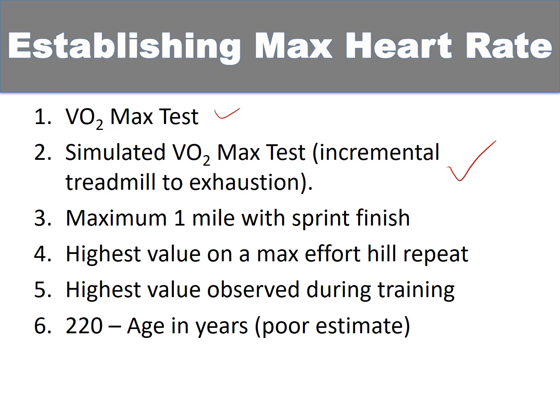Another simple way is a maximum mile to mile-and-a-half run with a sprint finish — check your heart rate immediately as you cross the line and you'll be very close to max heart rate. If you normally train with a heart rate monitor and download data to a software program, you can look through your archives for the highest value on a max-effort hill repeat. That'll probably get you within five or so beats per minute of your true max heart rate. You can also look for the highest value you observed during mixed-effort training, though that depends on how much intensity you put in.